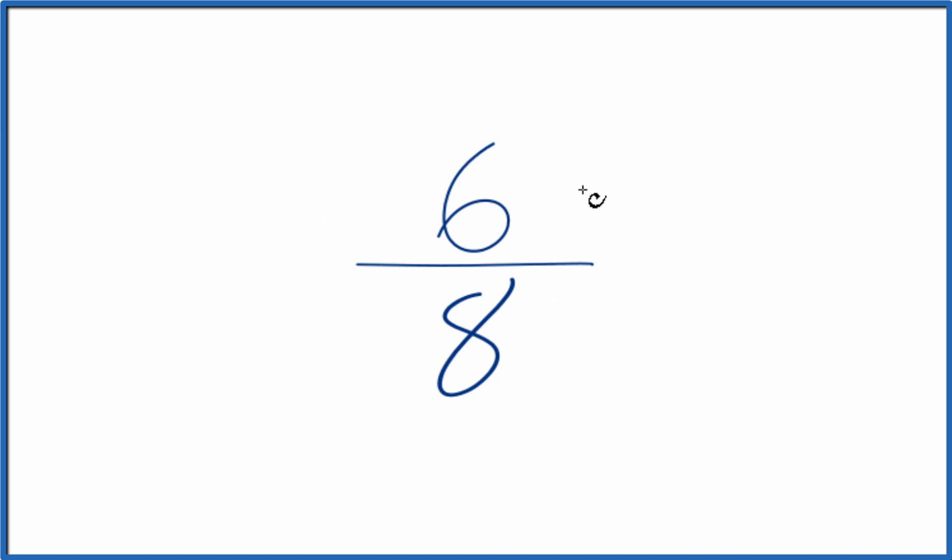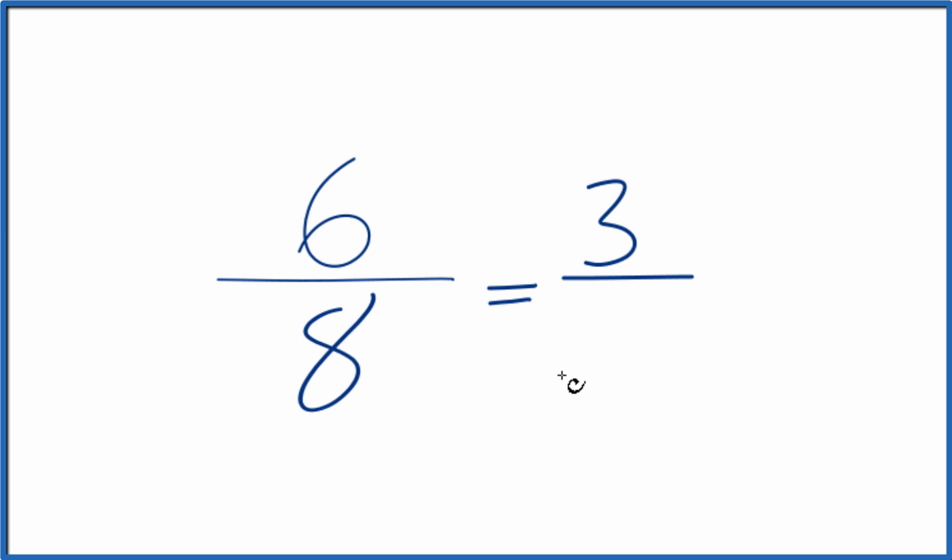What we're going to do is first, let's simplify this because we can reduce this further, and that'll give us an equivalent ratio or an equivalent fraction. So let's divide 6 by 2 and 8 by 2. 6 divided by 2, that would be 3. 8 divided by 2 is 4.